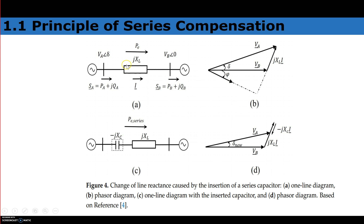When considering the reactance drop, since current is flowing through the reactance, a voltage drop of I×jXL will occur due to the inductive reactance of the transmission line. This voltage drop is drawn leading the current. The sending end voltage equals the receiving end voltage plus this voltage drop, and the sending end voltage will be at an angle delta. The real power flow is given by Va×Vb/X × sin(delta).